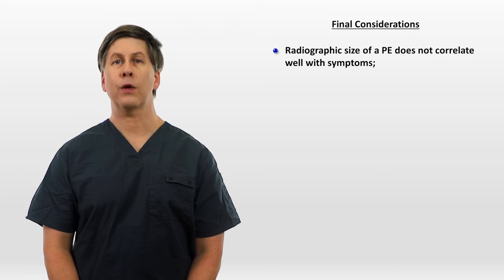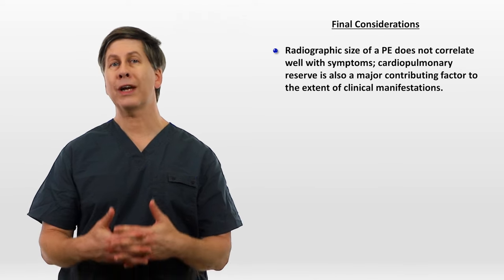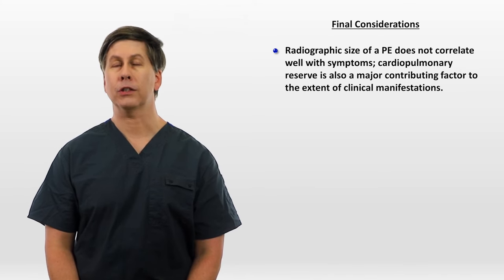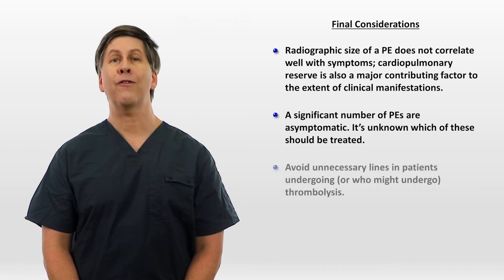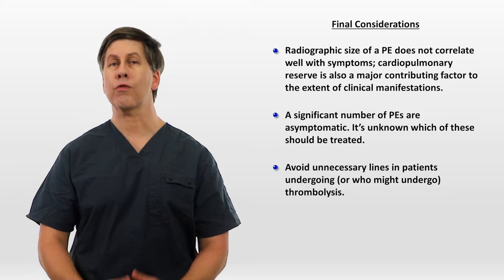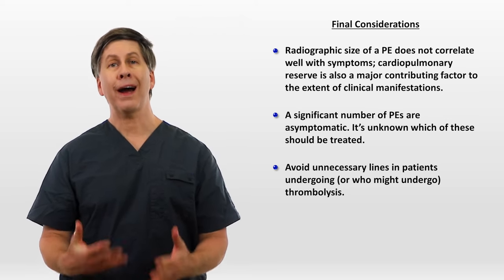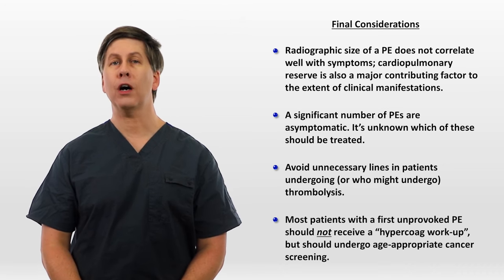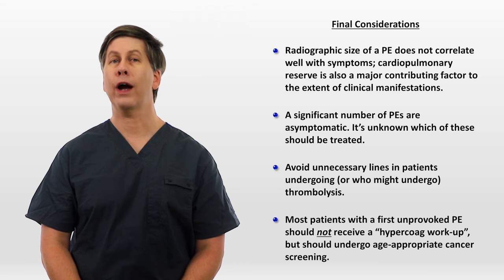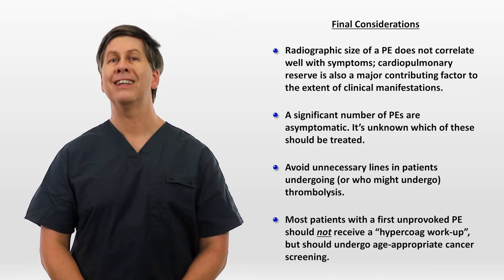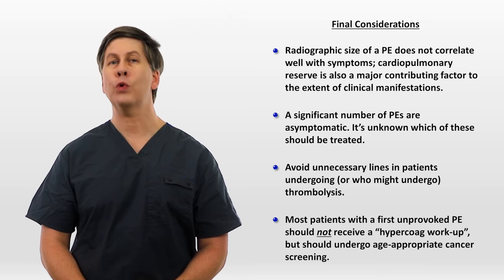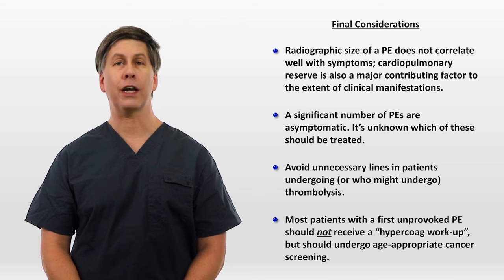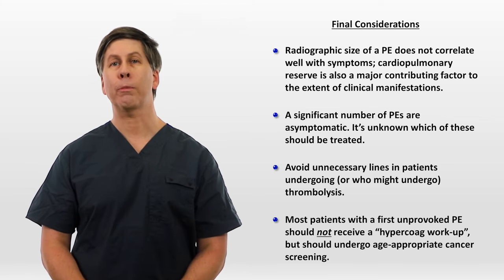Just a few final considerations. The radiographic size of a PE does not correlate well with symptoms — a person's cardiopulmonary reserve is also a major contributing factor. A significant number of PEs are asymptomatic, and it's unknown which of these should be treated. Avoid unnecessary lines in patients undergoing or who might undergo thrombolysis. And finally, while it was common practice in the past, most patients with a first unprovoked PE should not receive a so-called hypercoag workup, since the presence of an inherited thrombophilia typically has little impact on treatment decisions. However, they should undergo age-appropriate cancer screening.